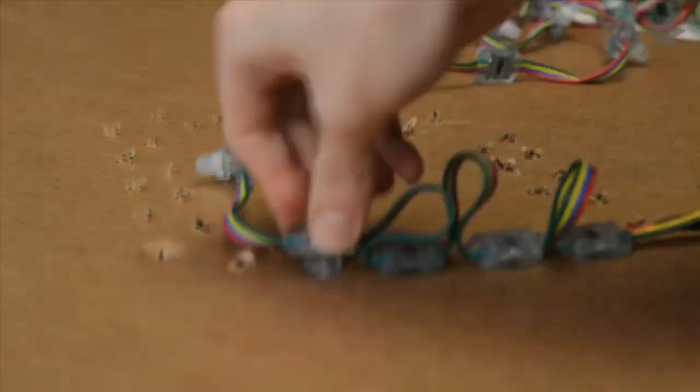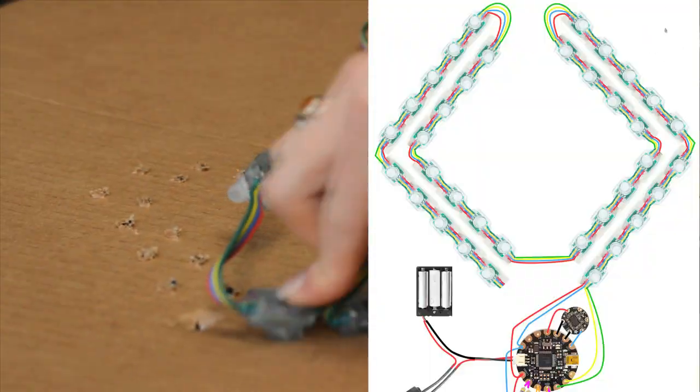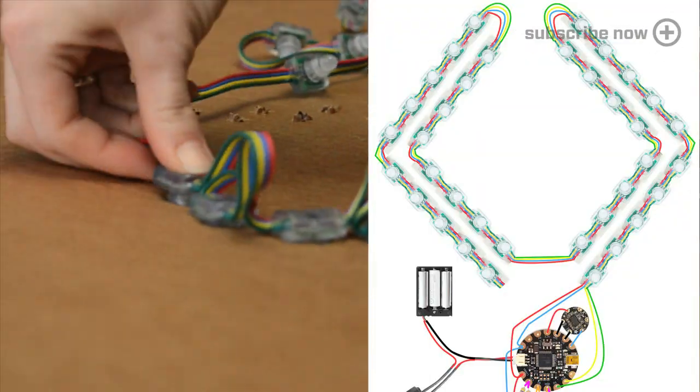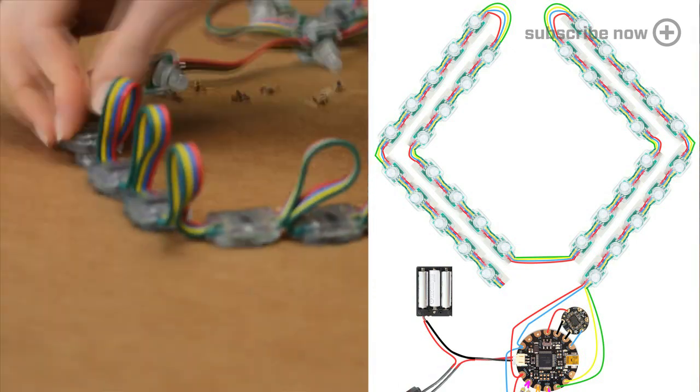Set up your pixels in this cardboard jig of sorts, and you can follow the diagram in the tutorial for the way the pixels will snake around the double diamond shape.